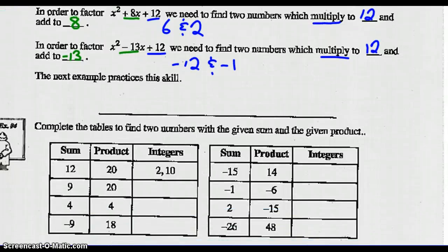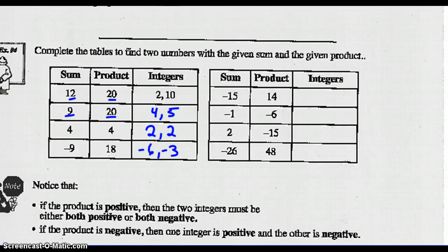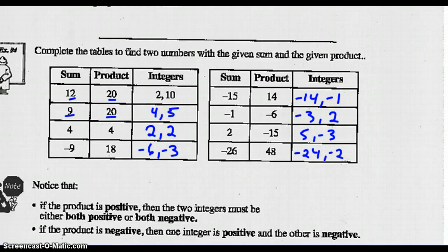Let's practice that skill. What two numbers multiply to 20 and add to 12? 2 times 10 is 20, 2 plus 10 is 12. What two numbers add to 9 and multiply to 20? 4 plus 5 is 9, 4 times 5 is 20. Let's complete this chart: 2 plus 2 is 4, 2 times 2 is 4. Negative 6 plus negative 3 is 9, negative 6 times negative 3 is 18. Negative 14 plus negative 1 is negative 15, negative 14 times negative 1 is 14. Negative 3 plus 2 is negative 1, negative 3 times 2 is negative 6. 5 plus negative 3 is 2, 5 times negative 3 is negative 15. Negative 24 plus negative 2 is negative 26, negative 24 times negative 2 is 48.